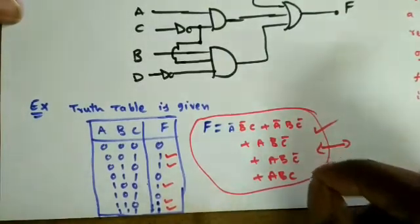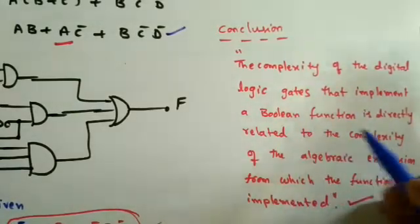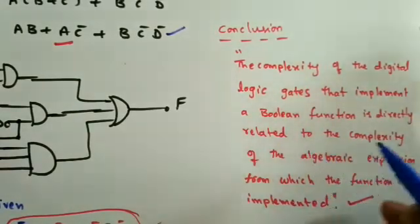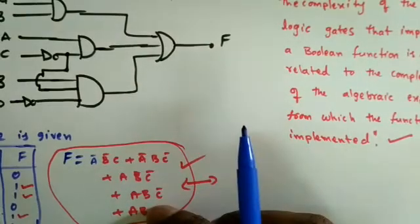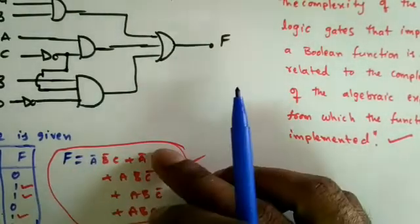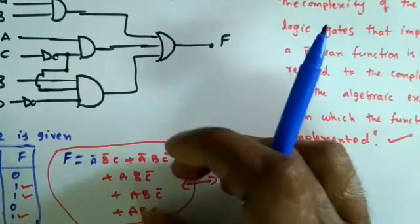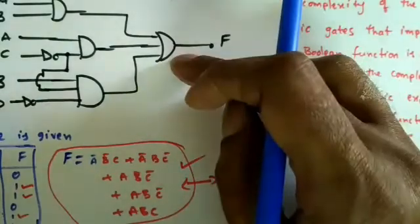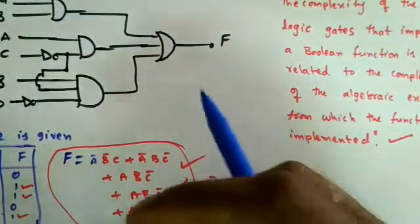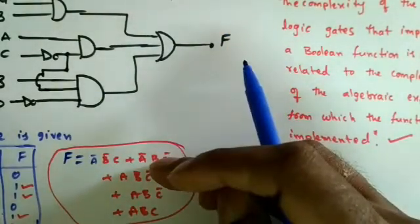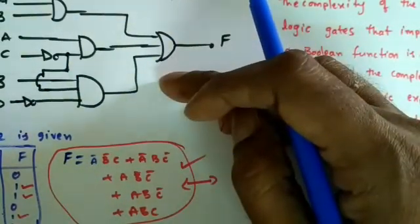The complexity of the digital logic gates implementing a Boolean function is directly related to the complexity of the algebraic expression. If the expression is simplified, we get a simplified logic circuit with minimum number of literals, which is the reason we always simplify Boolean expressions.